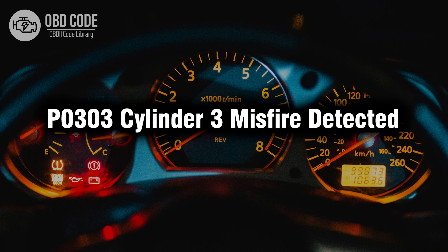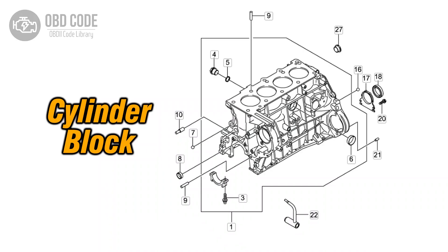Welcome. In this video we will talk about code P0303, its symptoms, causes and possible solutions. The P0303 trouble code is associated with Cylinder 3 misfire detected, indicating that there is a misfire specifically in Cylinder 3.